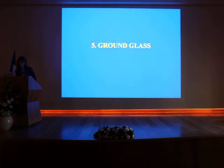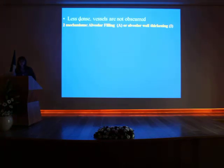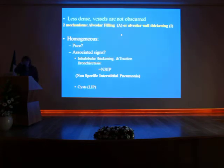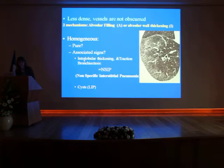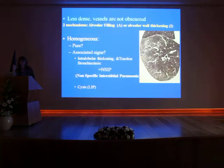The last pattern is ground glass. Ground glass is not a very helpful sign because it is not specific at all. It is an opacity which is less dense than consolidation, and vessels are not obscured. The difficult thing is that ground glass may be due to two different mechanisms: alveolar filling, which is more an alveolar process, or alveolar wall thickening, which is an interstitial disease. If there is associated intralobular thickening and traction bronchiectasis, it is a sign you will find in NSIP — non-specific interstitial pneumonia — where the main features are ground glass and traction bronchiectasis.